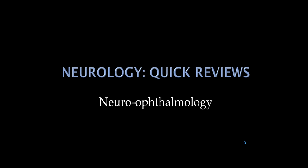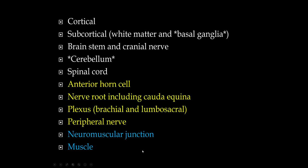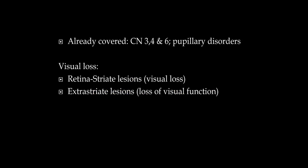Our next topic is neuro-ophthalmology. We've been starting from muscle and working our way up. We did cerebellum last time. In the brainstem and cranial nerve section, we didn't spend a lot of time on the optic nerve. So in this lecture, we're going to pick up on the optic nerve and visual pathways, which will take us through subcortical and cortical areas of the brain. We've already covered cranial neuropathies 3, 4, and 6, and disorders of the pupil. This lecture will really focus on two areas: visual loss and loss of visual function.